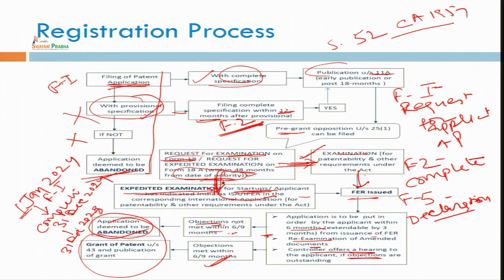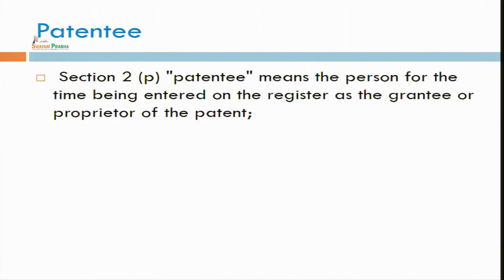This is a legal procedure whereby the inventor is provided with exclusive ownership. Why should we go for registration? It is a legal procedure by which you are entitled for that ownership and entitled to commercial exploitation of that patent. You can also restrain other persons from using it, because it is prima facie evidence of ownership. Now you are the owner — just like an identity card, you have the patent certificate with you. Now you become a patentee.